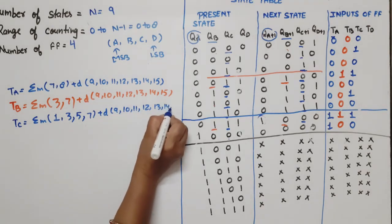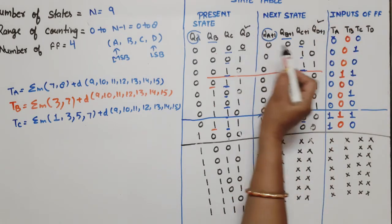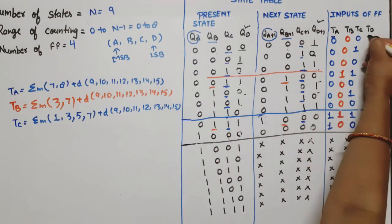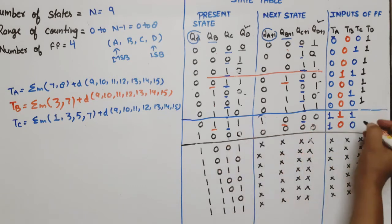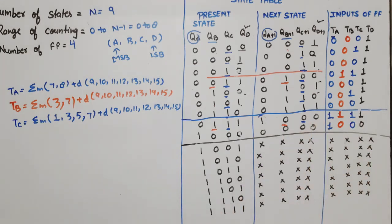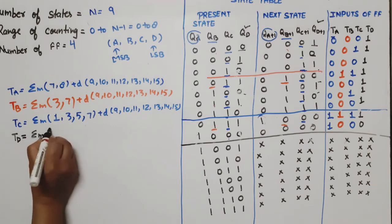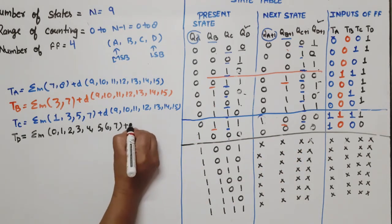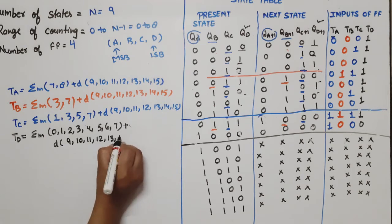For TD, we consider QD and QD_next. All transitions from state 0 through 7 show changes, so TD=1 for those. At state 8, QD goes from 1 to 0 — that is also a change, giving TD=1. Except for state 8, which gives 0. The TD equation is summation of minterms 0, 1, 2, 3, 4, 5, 6, 7 (state 8 gives 0), plus don't-cares 9, 10, 11, 12, 13, 14, 15.